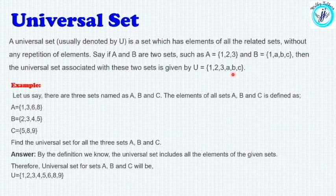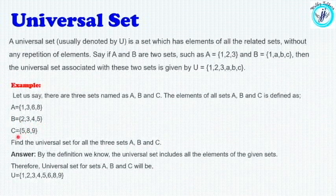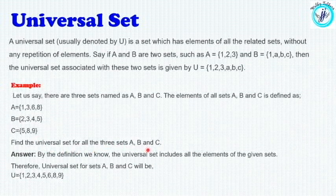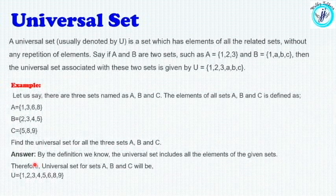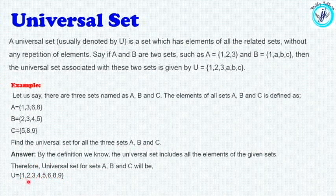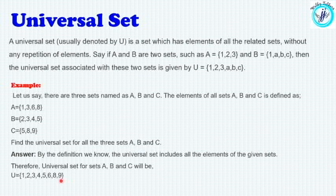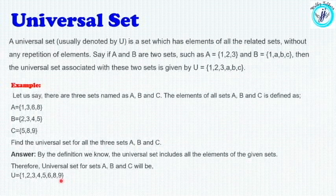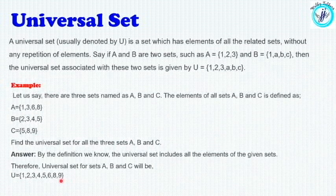Another example: A is {1, 3, 6, 8}, B is {2, 3, 4, 5}, and C is {5, 8, 9}. Find the universal set of all three sets A, B, C. The universal set U contains all elements from A, B, and C without repetition, so U = {1, 2, 3, 4, 5, 6, 7, 8, 9}.